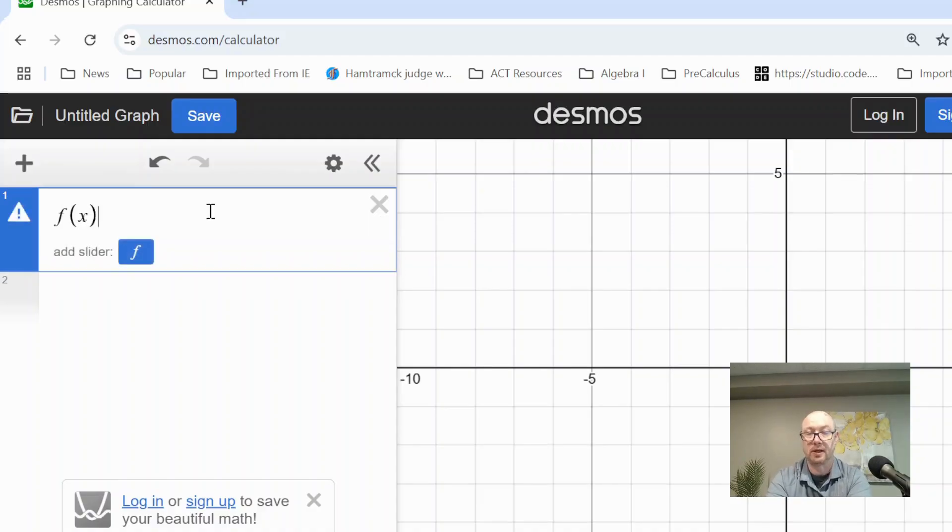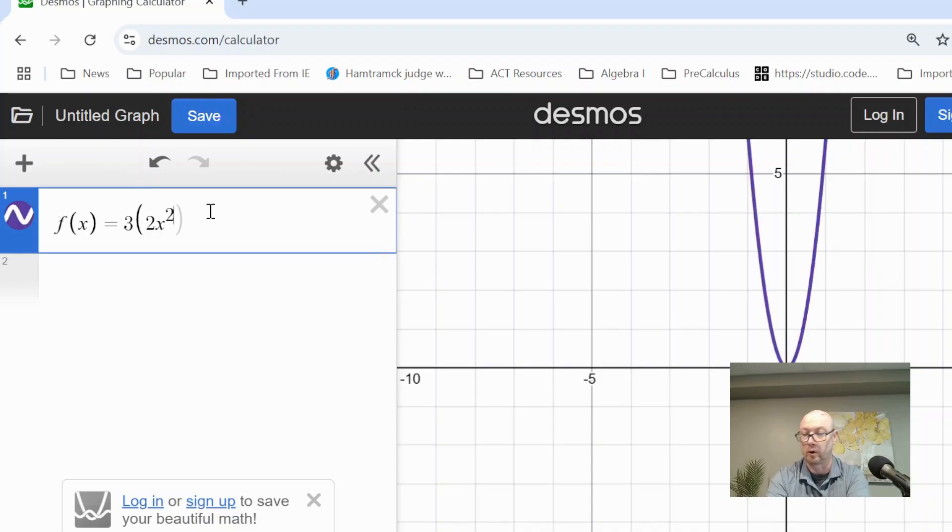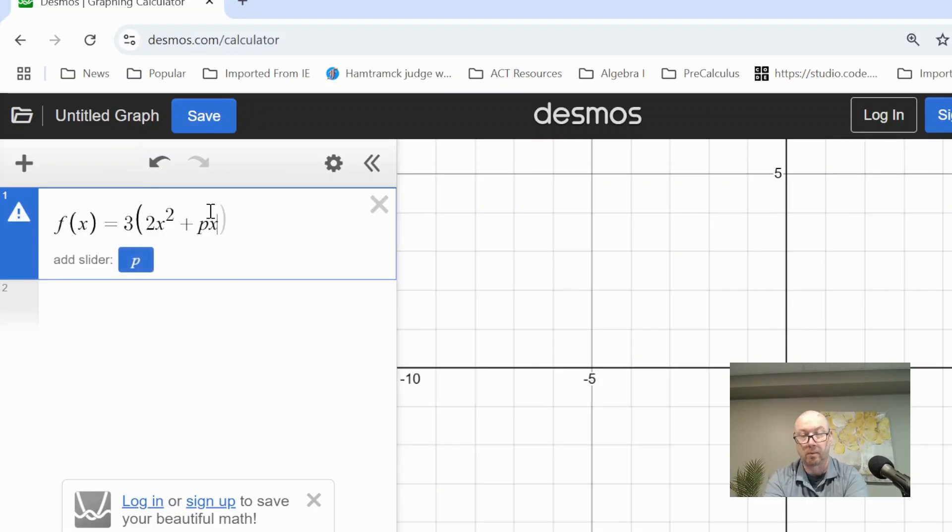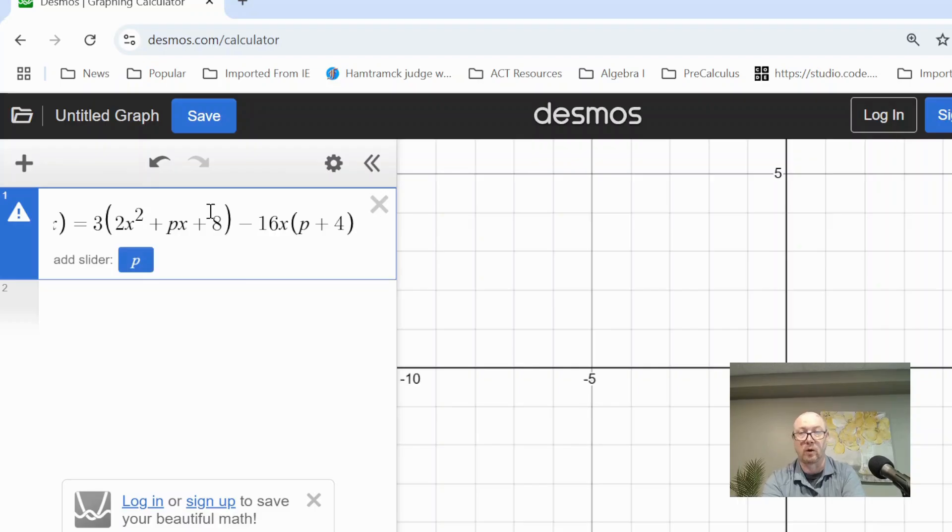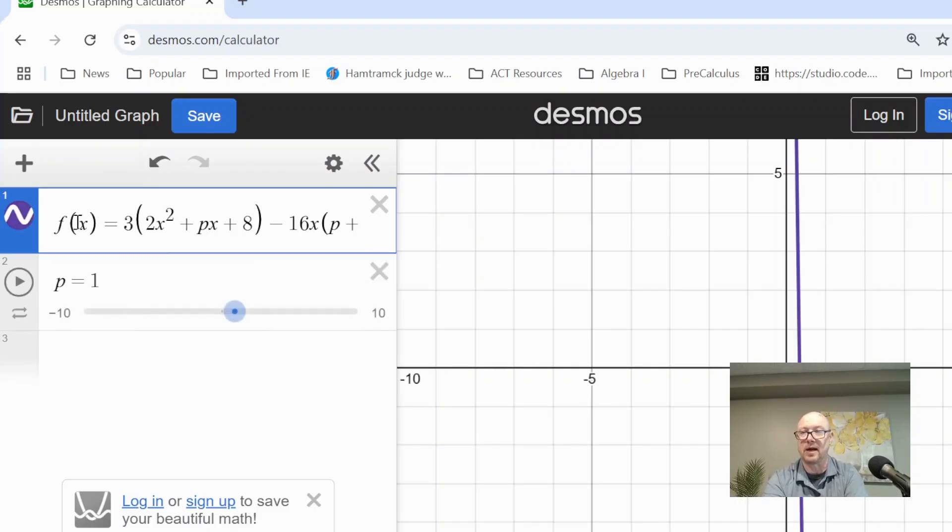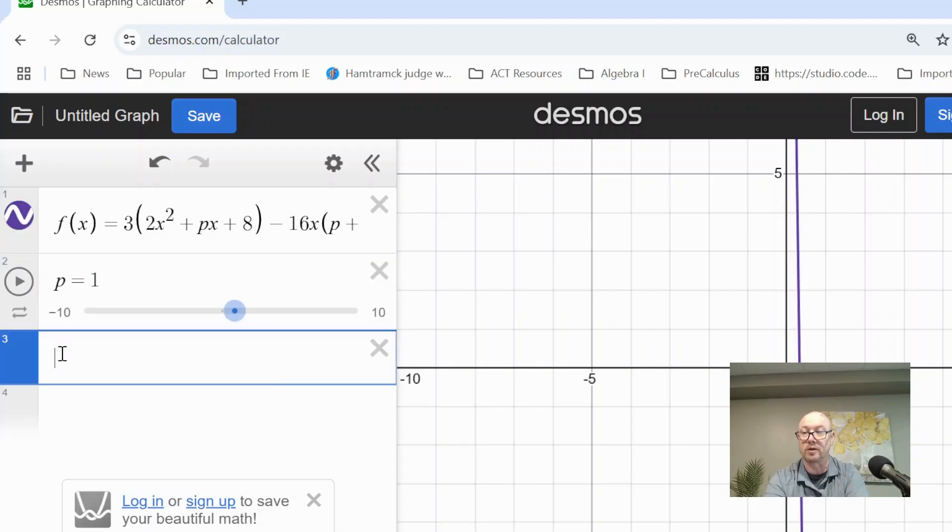We're going to put the first expression in as f of x. So we've got 3 times 2x squared plus Px plus 8 minus 16x times P plus 4. It'll ask us to add a slider. Let's add a slider at this point so it'll define that function.